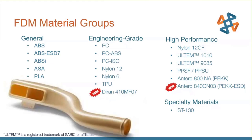We have specialty materials including ST130 — sacrificial tooling. You make a mandrel out of ST130, wrap it in carbon fiber or fiberglass, then soak the mandrel out and you have a carbon fiber tube. This is very often used in the automotive industry for race cars where they're trying to get high strength while reducing weight.